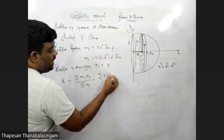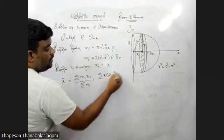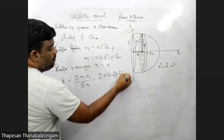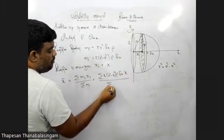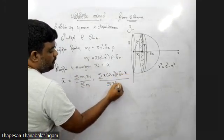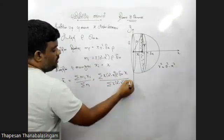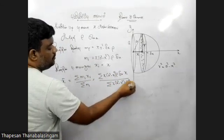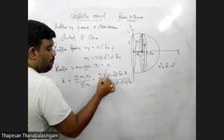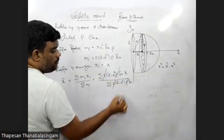A squared minus X squared, rho over delta X into X. Mi Xi. Sigma. Mi. Pi and 2. A squared minus X squared into rho. Delta X. Y into rho.